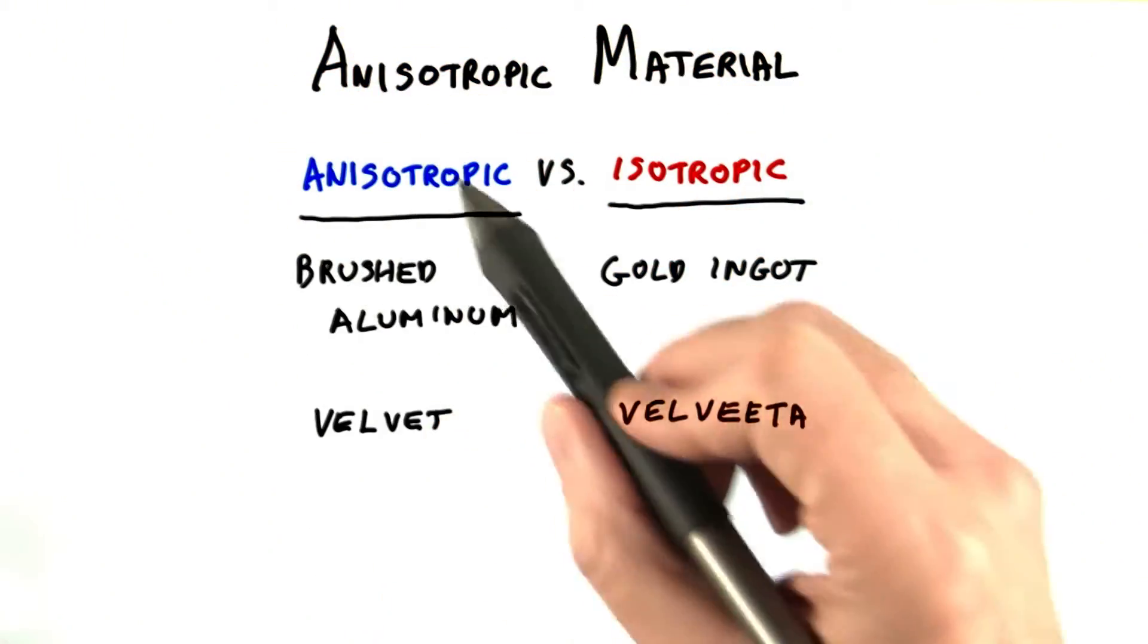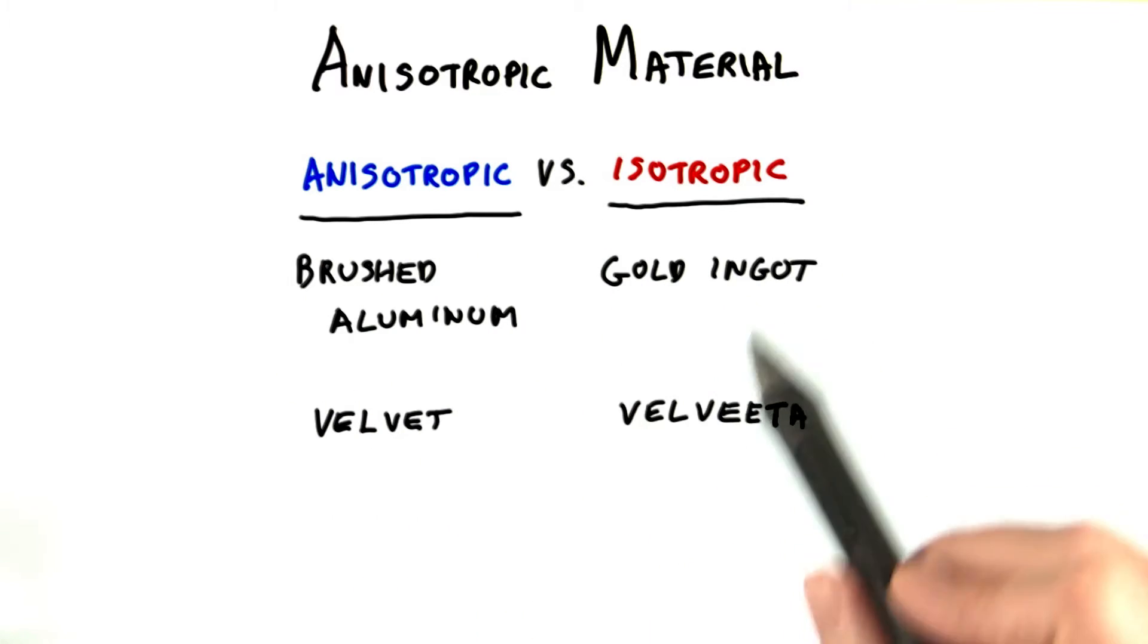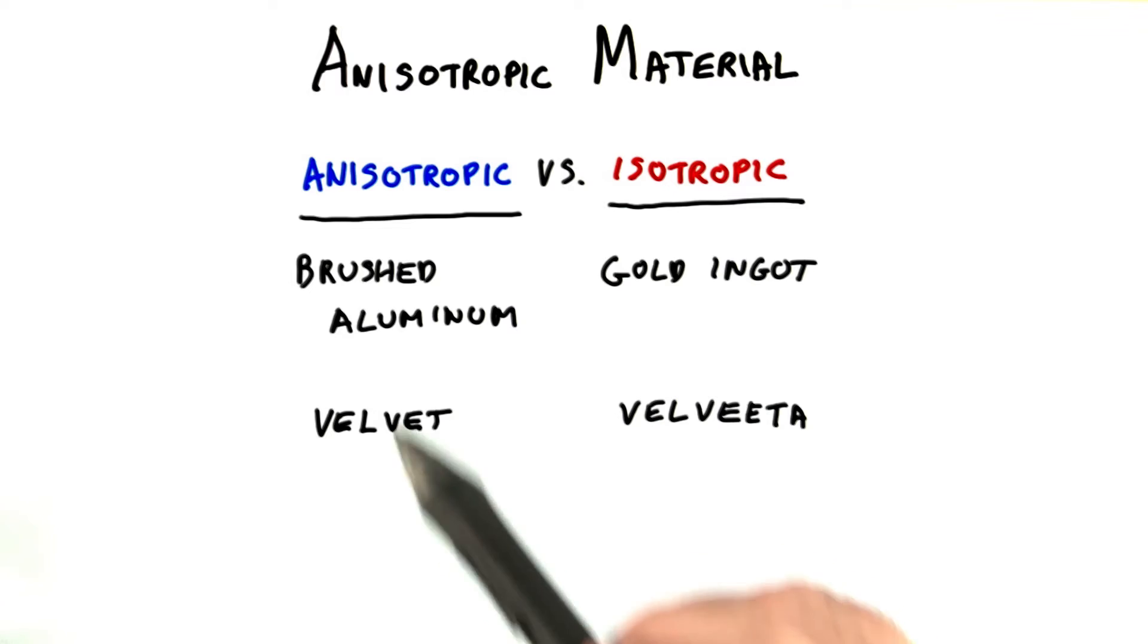The second kind of material is called anisotropic, compared to isotropic, which is how most materials are. Good examples of anisotropic materials are brushed aluminum and velvet.